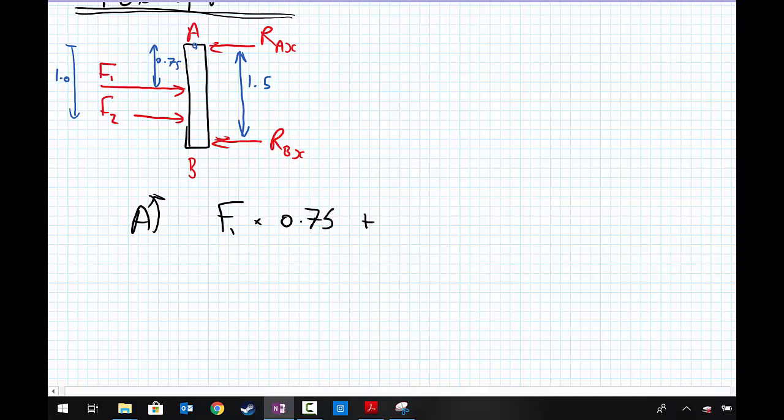I have F1 multiplied by the lever arm from A, 0.75, plus, still going in the anticlockwise direction, F2 multiplied by the lever arm from A of 1. Opposing that, going in the clockwise direction, I have RBX multiplied by the lever arm of 1.5 meters from A, which must equal 0.